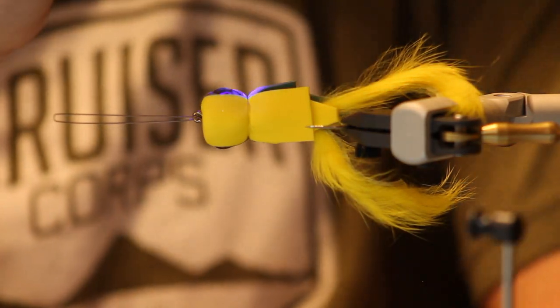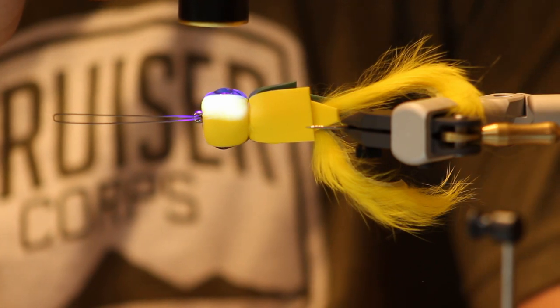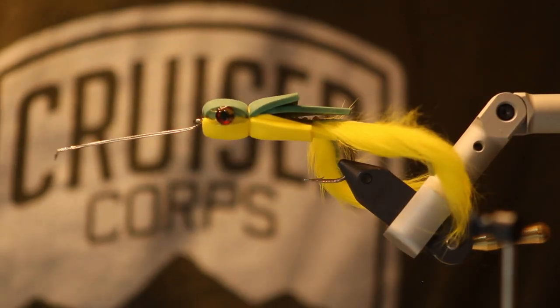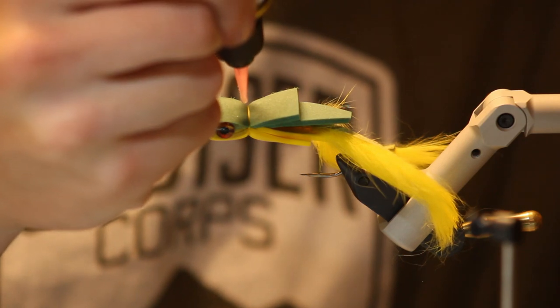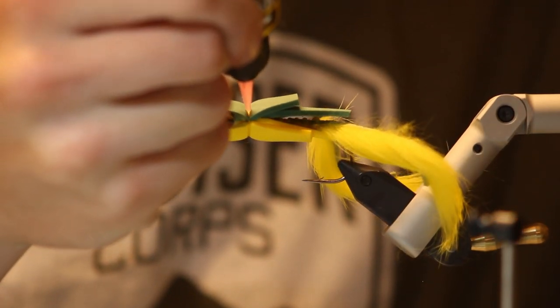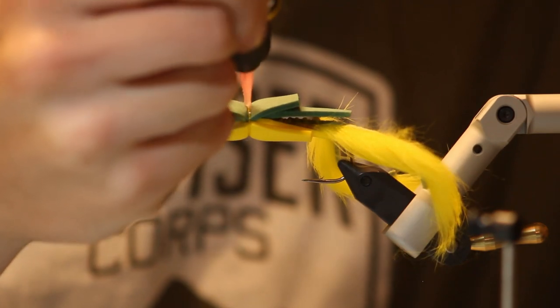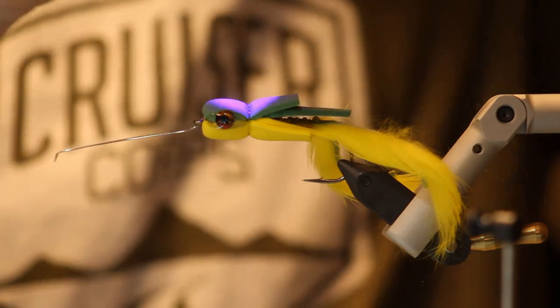Grab our light. Cook it. Alright, you guys saw how we did that pretty weak whip finish here. We're just going to lay a bead of UV glue right across that. Try not to make it too big of a mess and then we'll just throw the UV light on that again.